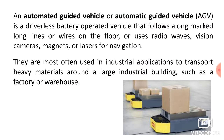The definition: an automated guided vehicle, or AGV, is a driverless battery-operated vehicle that follows along a marked line or wires on the floor, or uses radio waves, vision cameras, magnets or laser for its navigation. Basically, an automated guided vehicle is a driverless, autonomous vehicle — there is no need of a driver.